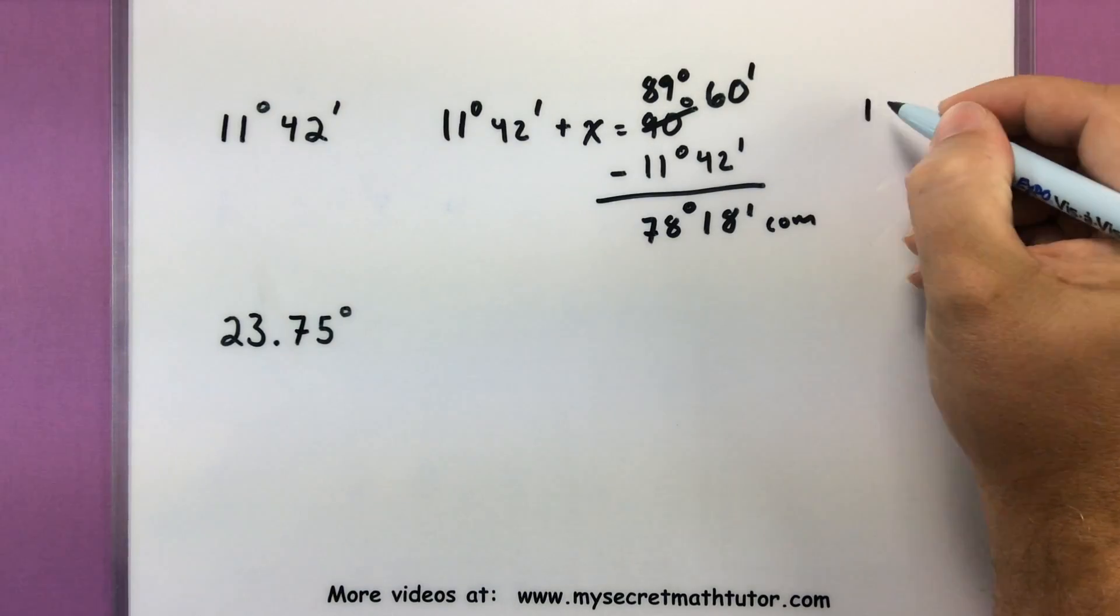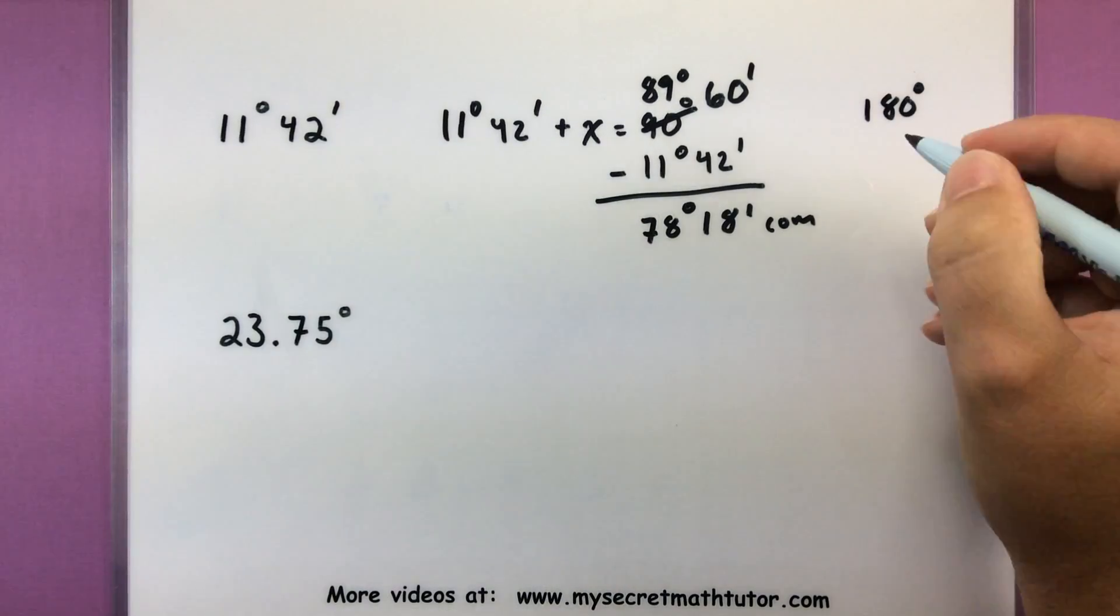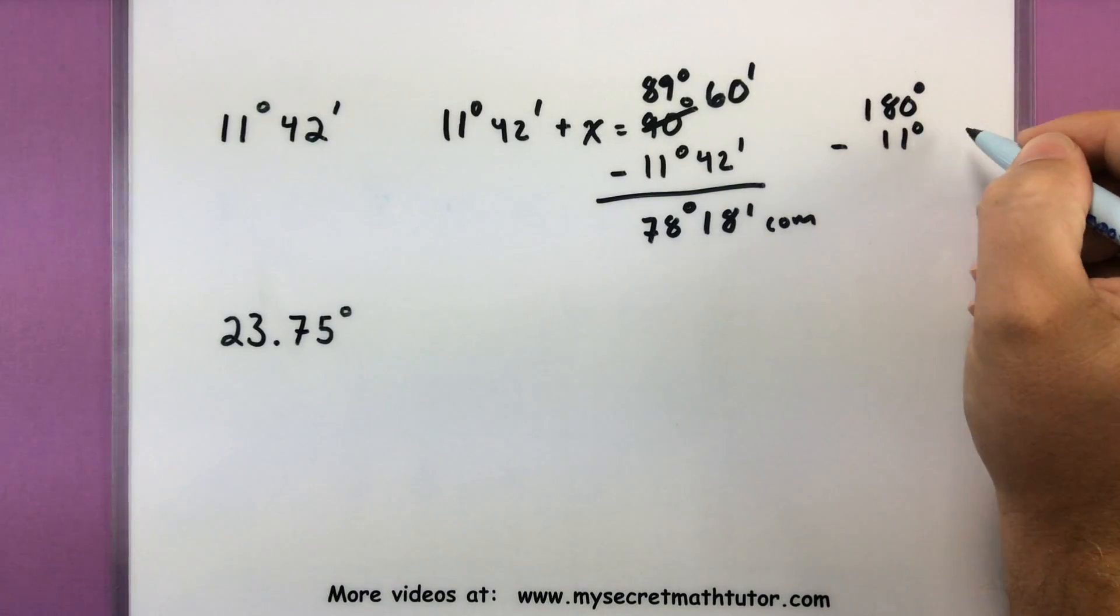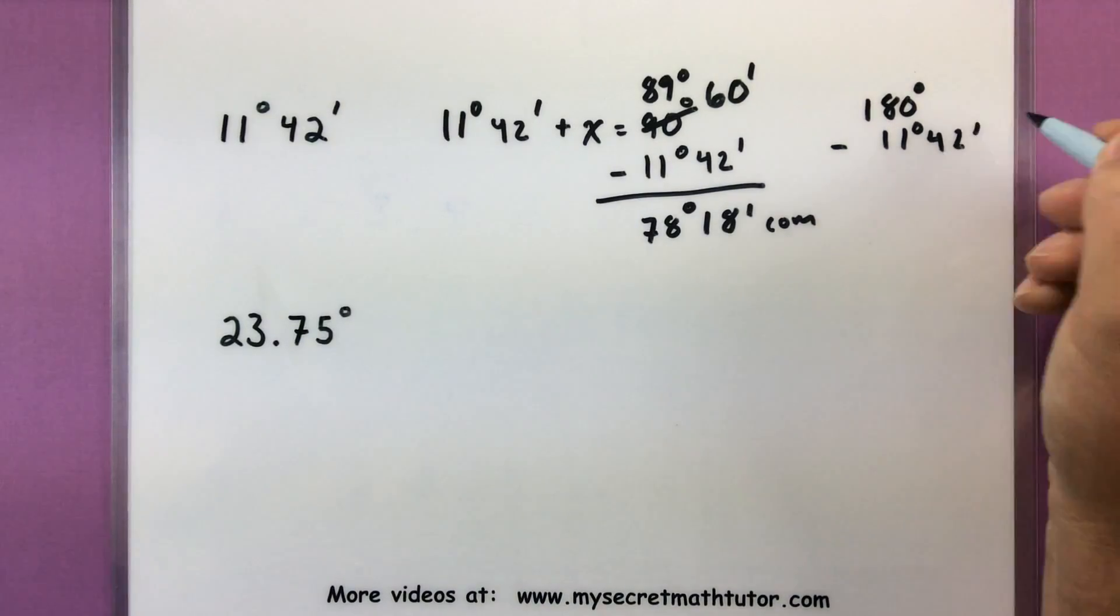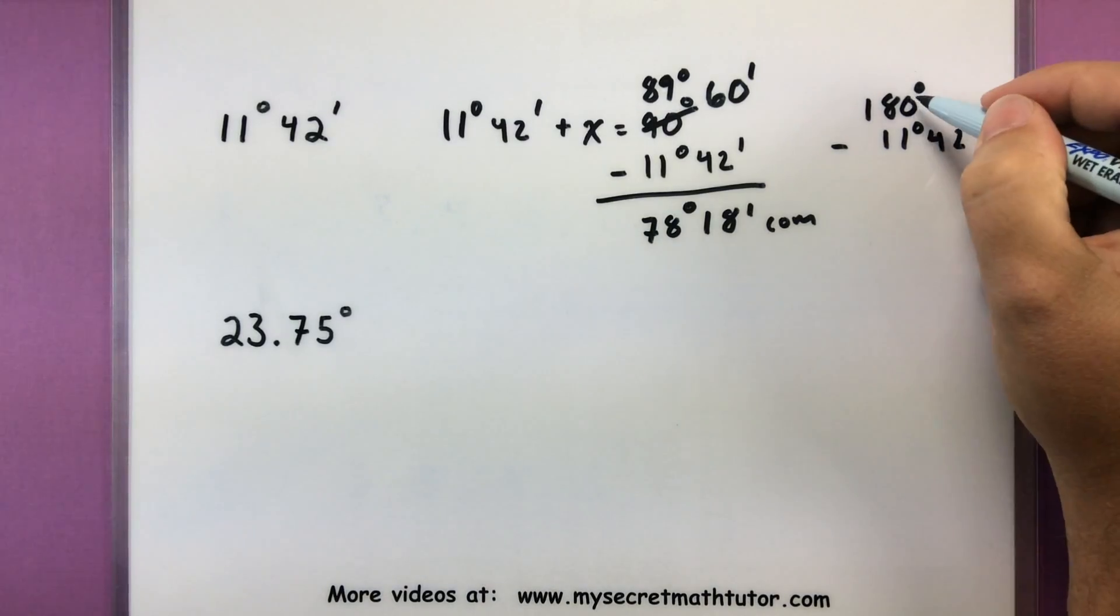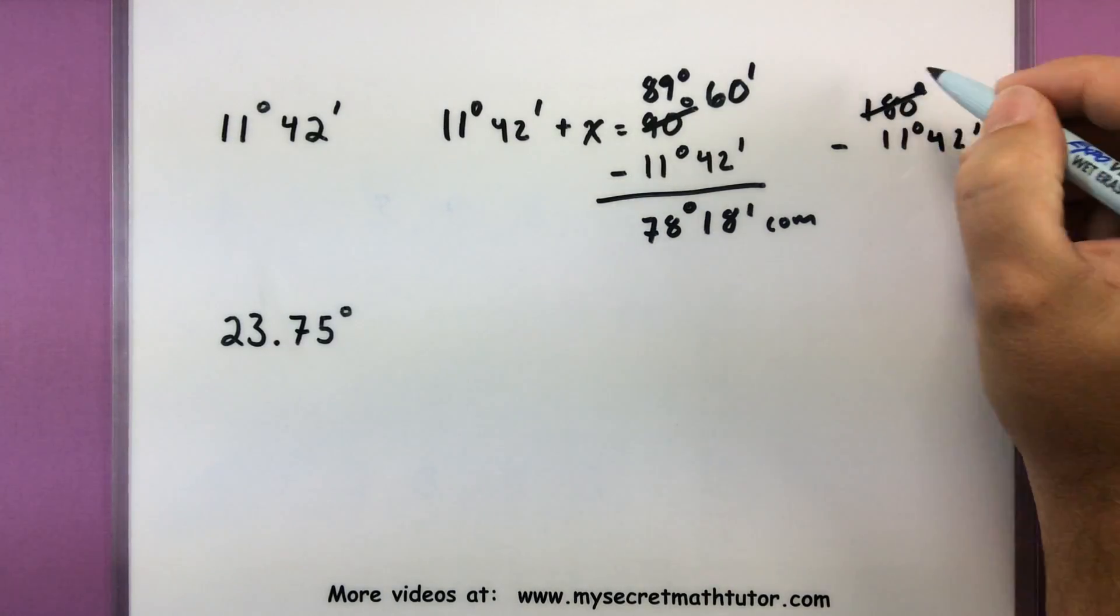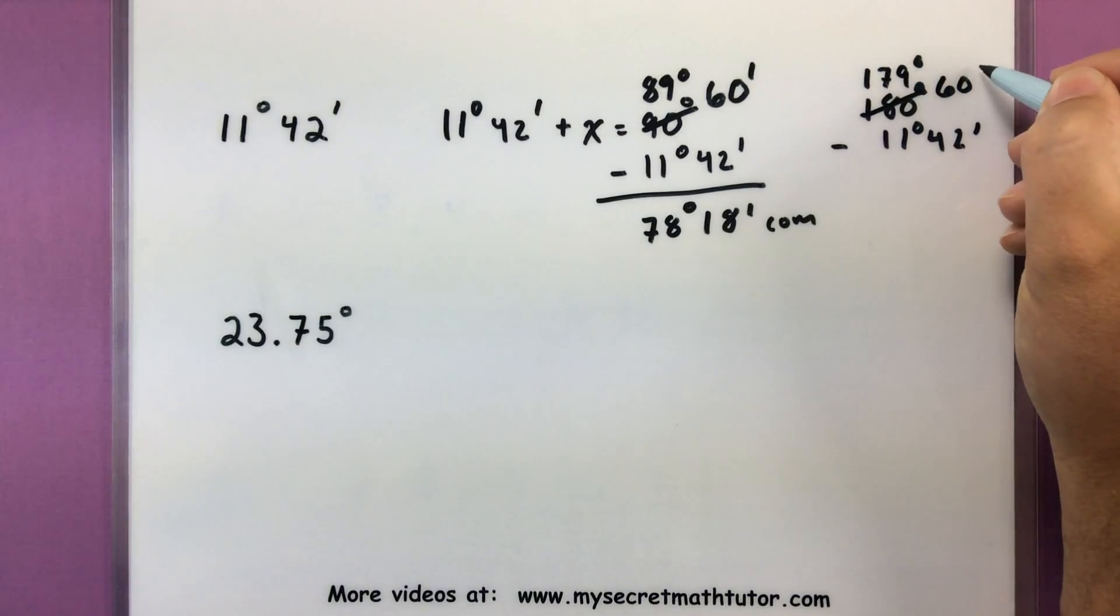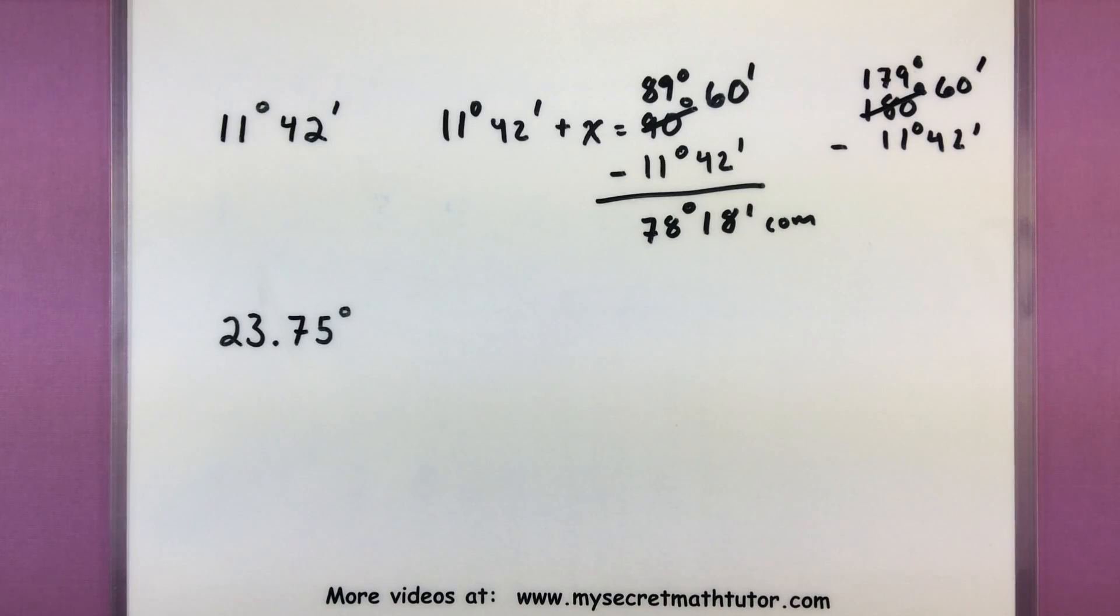Let's do the shortcut on the other one where we'll just take 180 degrees. And again we'll subtract our original angle, there's 11 degrees and 42 minutes. Like before, I'm going to go ahead and borrow one of our degrees. So let's make this 179 degrees. So we'll take one of those degrees, turn it all into minutes.